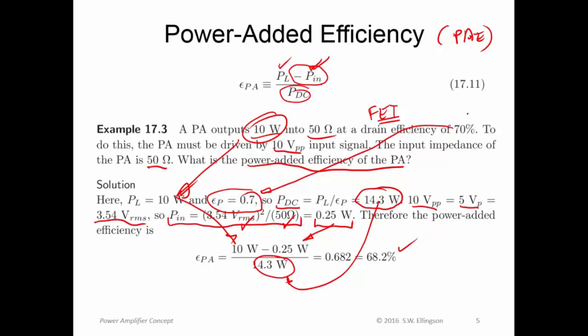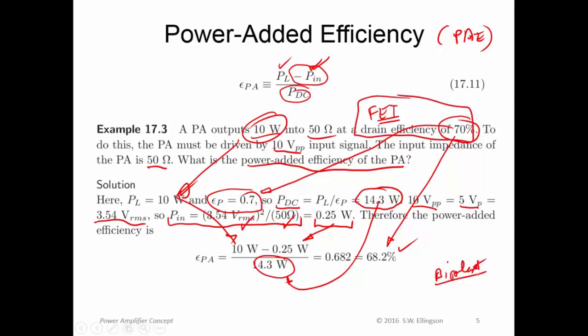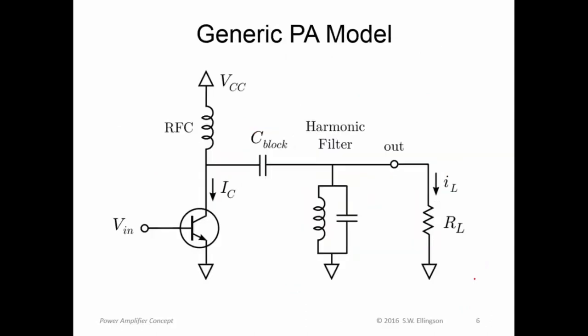Power added efficiency is typically less than the drain efficiency for a FET. By the way, I refer to drain efficiency here, which presumes a FET. For bipolar transistors, that same quantity is often referred to as collector efficiency — they're the same thing, just one is for FETs and one is for bipolar. Here's a generic model for a power amplifier that I'll use to analyze the class A case in this lecture and other classes in the next lecture. I'm assuming a bipolar transistor here, though the analysis works equally well with a FET.